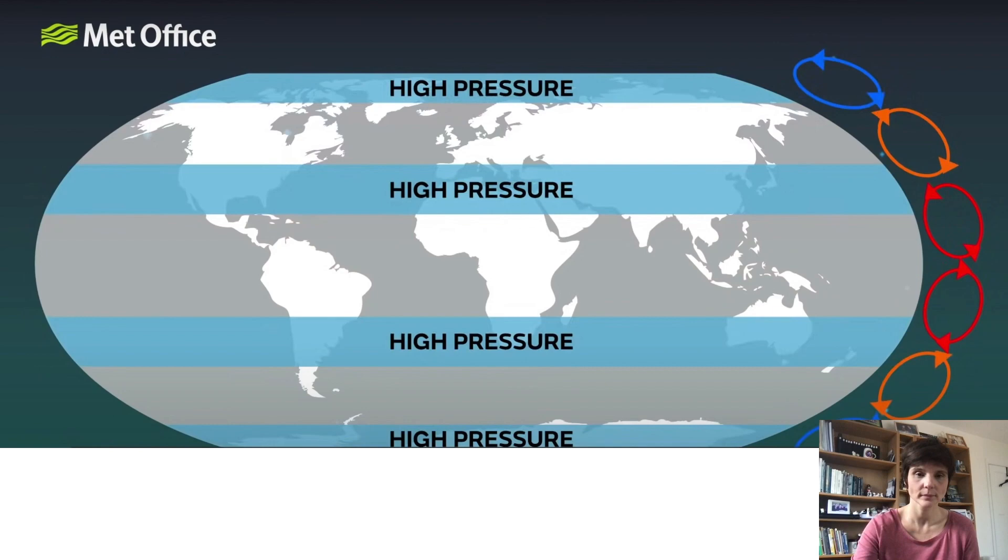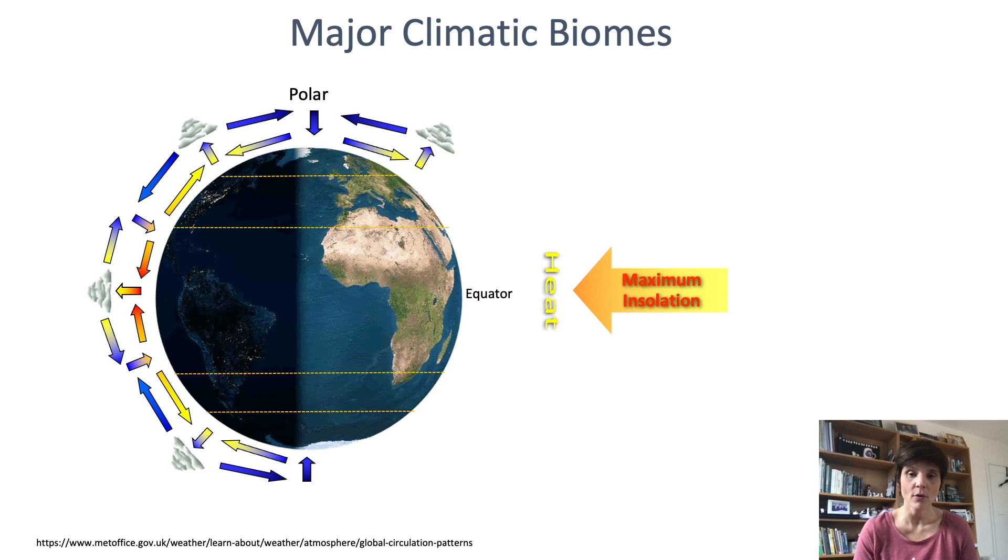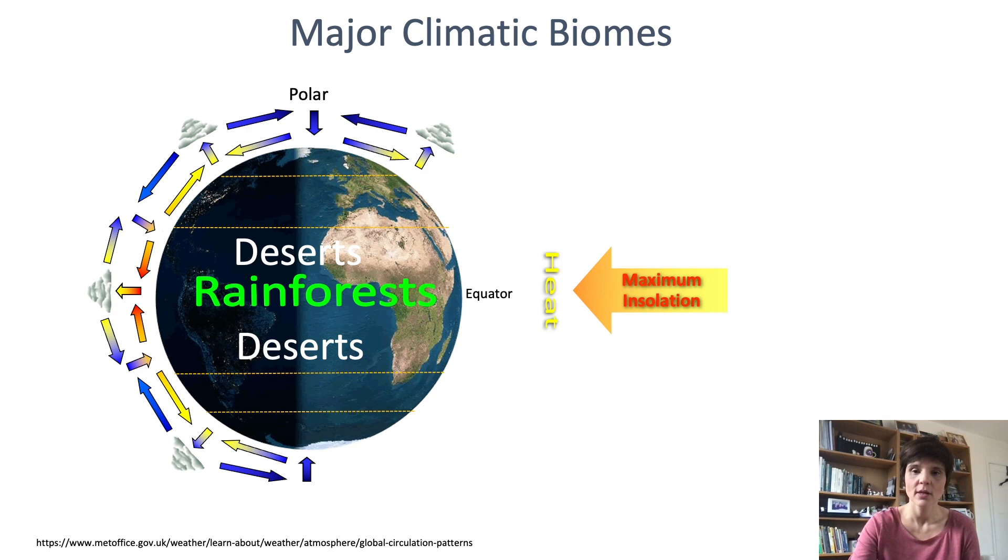The combination of temperature and precipitation around the globe creates different types of biomes and landscapes. Rainforest in the tropics, hot desert at subtropical regions, forest at mid-latitudes and cold desert or tundra in the polar regions.